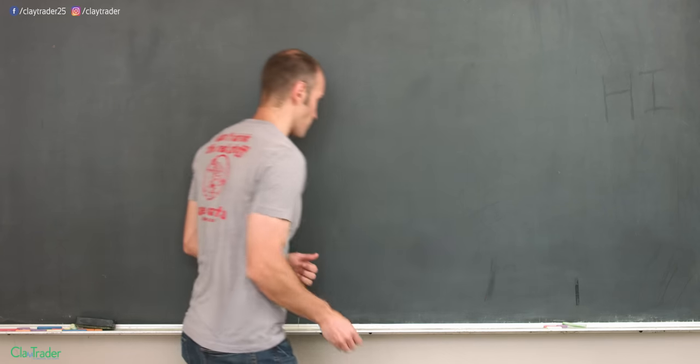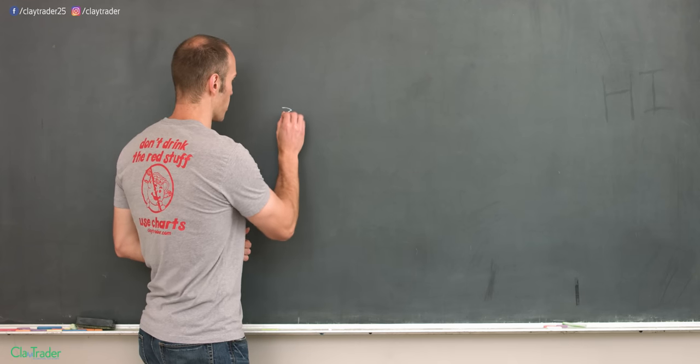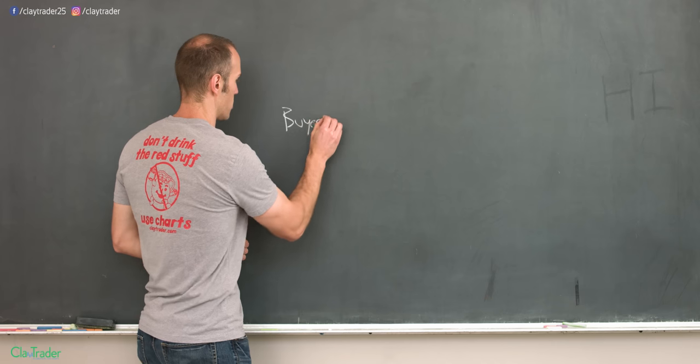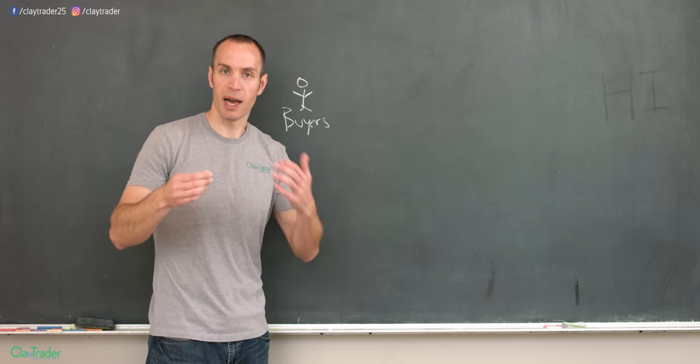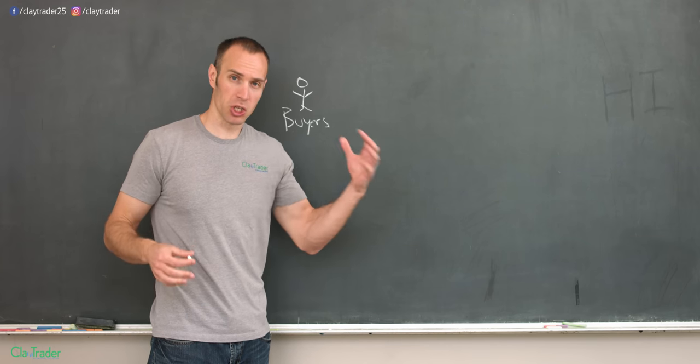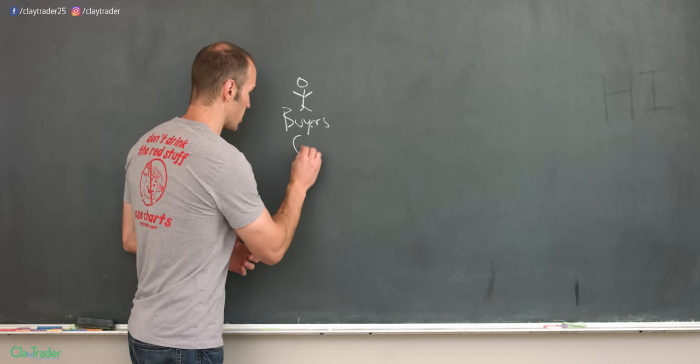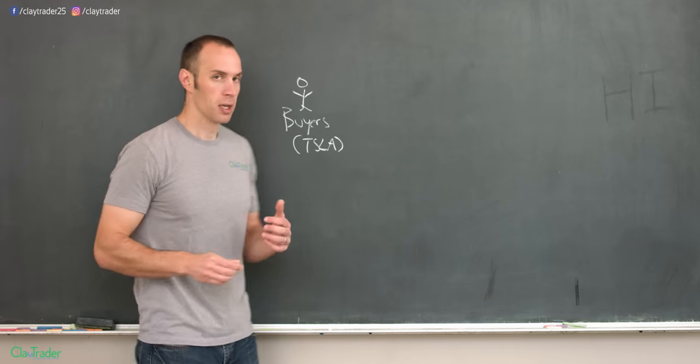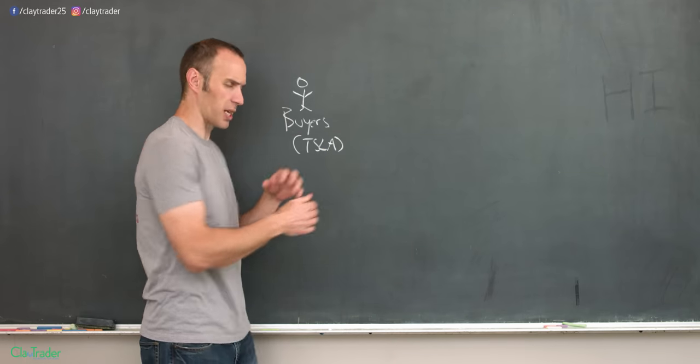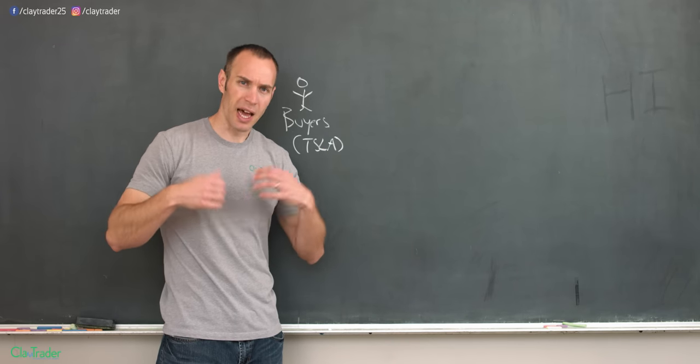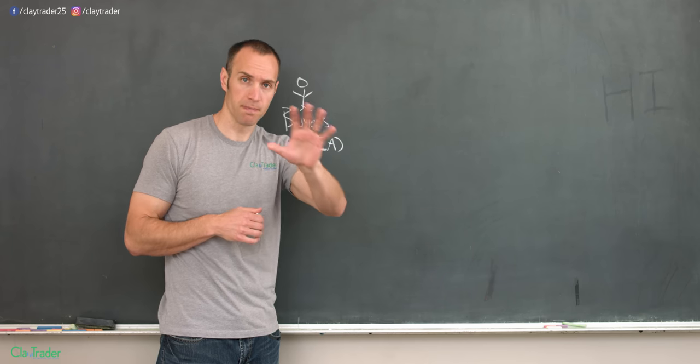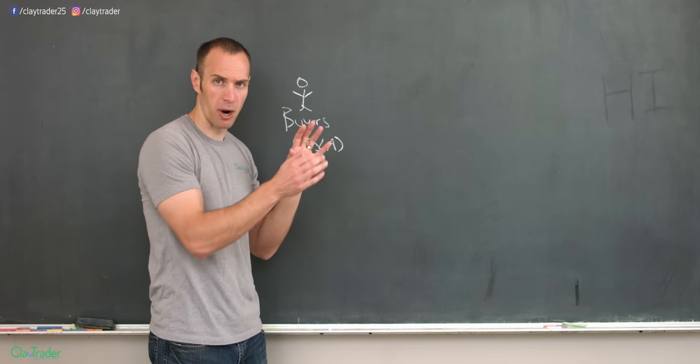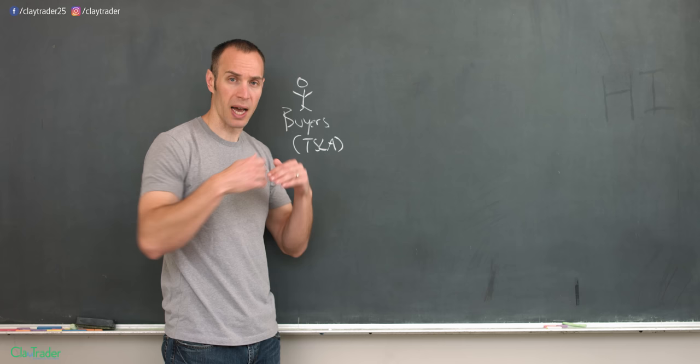So in the market, we have people known as buyers. And these people want to buy a stock. For example, we'll just use Tesla. They want to buy Tesla. So that's the foundation. Yes, there's buyers in the market. And when a lot of people buy a stock, it causes it to go up. That's just foundation. Lots of buyers in the market. When people buy, stocks will go up.